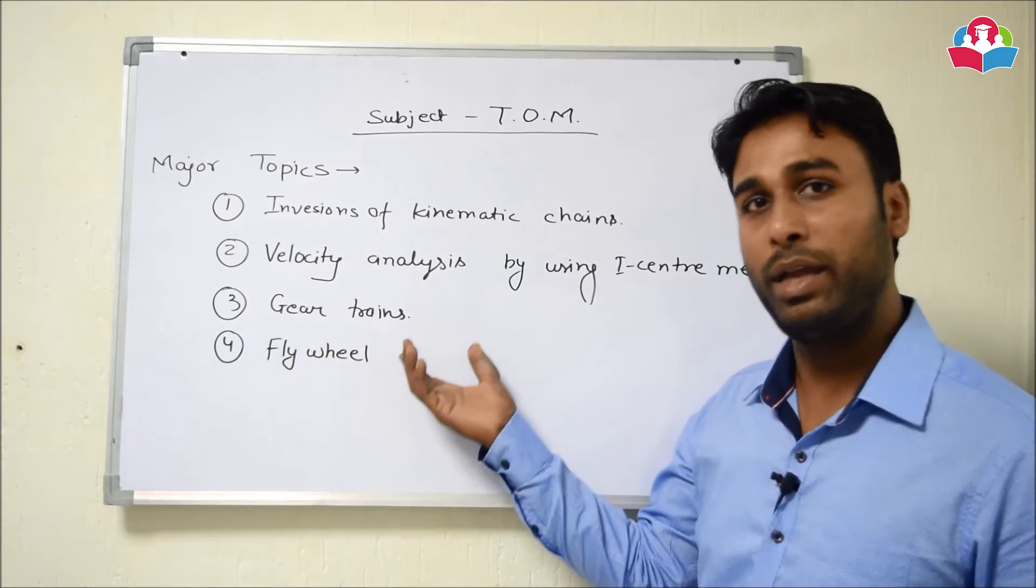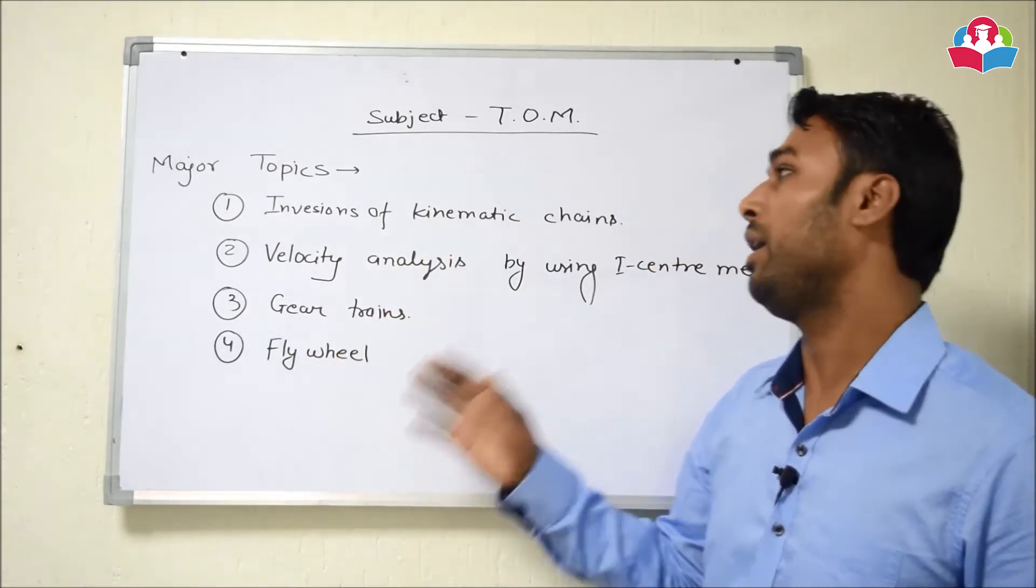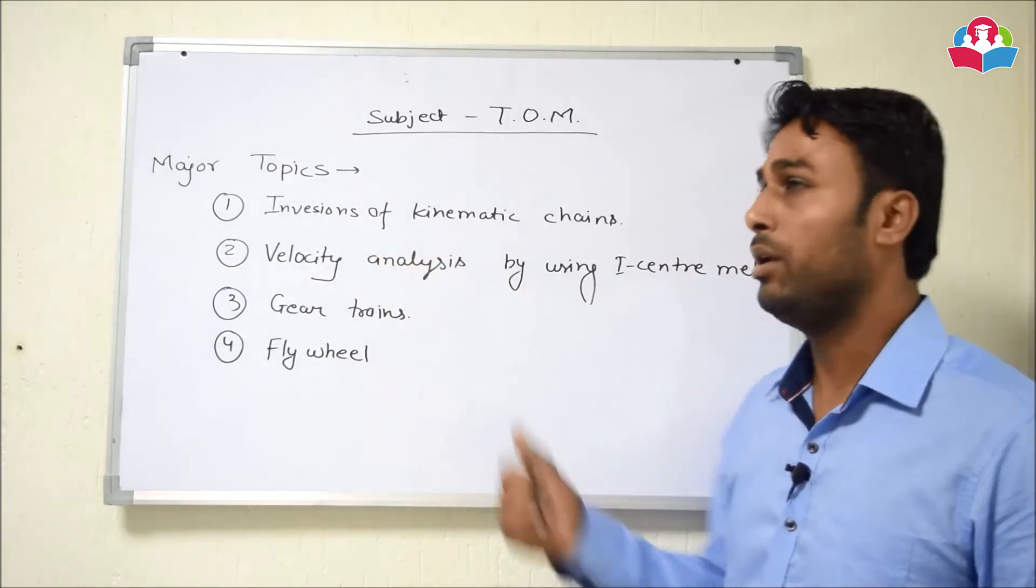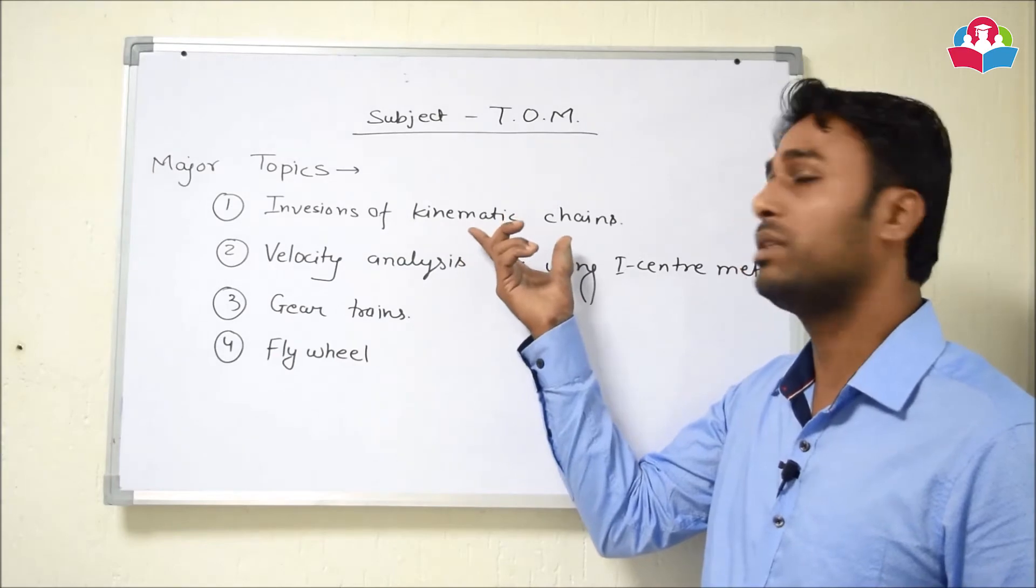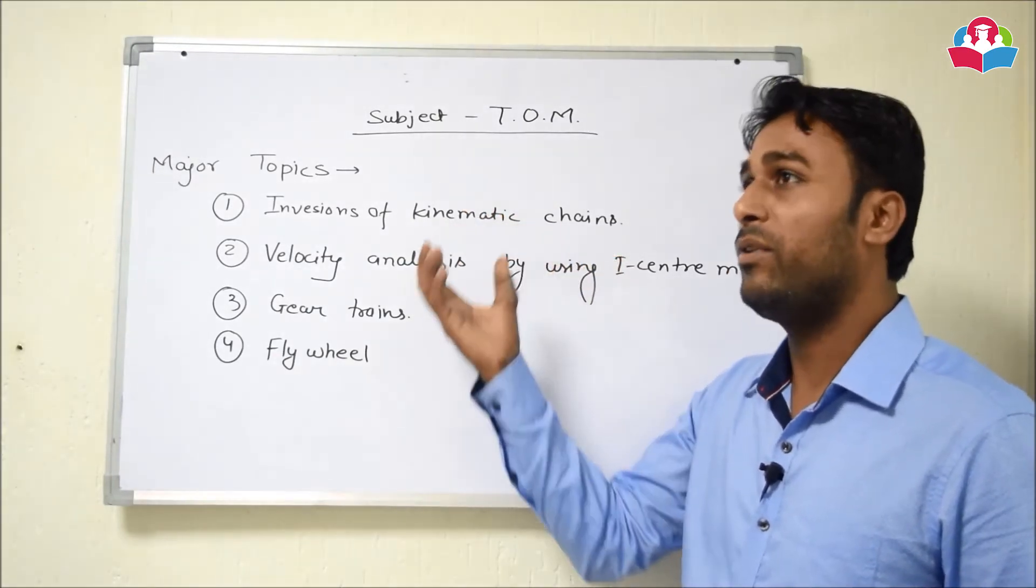Because every year we see a question from all these topics in GATE. So first one is inversions of kinematic chain. So what is inversion? Inversion is nothing but the kinematic chain and we are fixing different links at different times and we are getting different mechanism. That is called inversions.